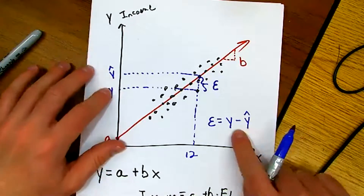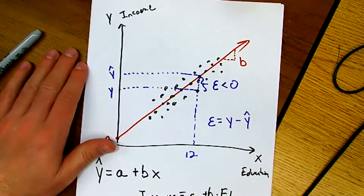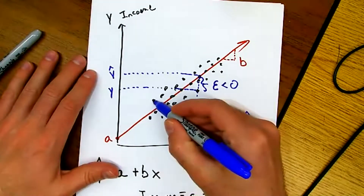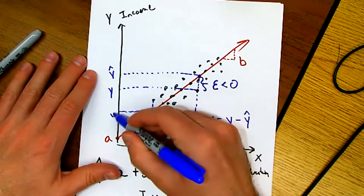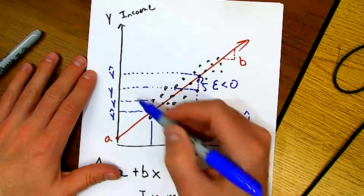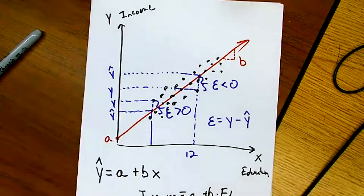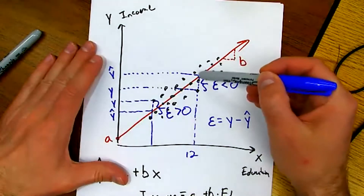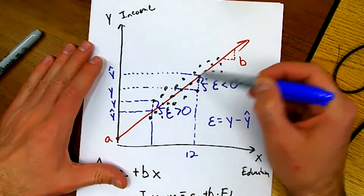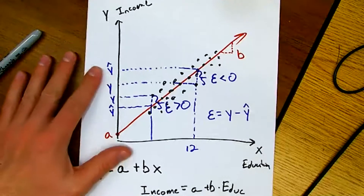If my prediction was too high, I'll have a negative error term. If the predicted Y is below the actual Y, the error term is positive. For every single observation I could look at the difference between the actual Y and the predicted Y — the point on the line of best fit — and I would have an error term for every single observation.